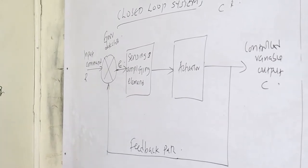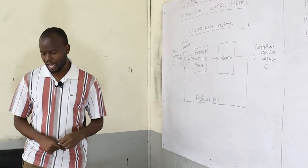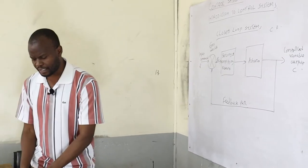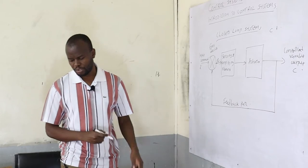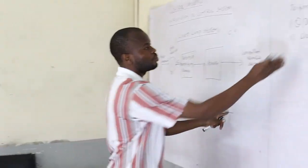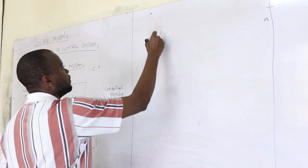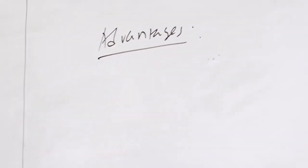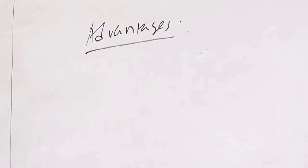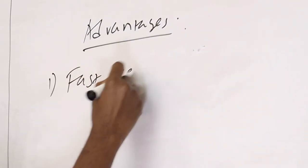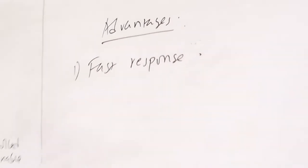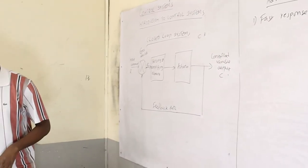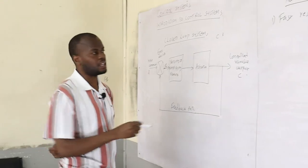This system can also serve as a regulatory system. The advantages of the closed loop system include fast response, because whenever there is a disturbance, there is a corrective mechanism initiated via the feedback path to bring about the corrective action.